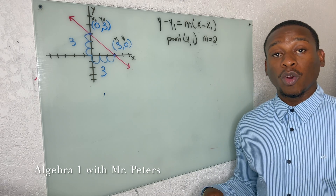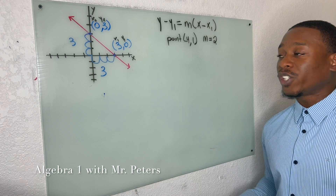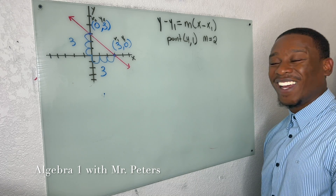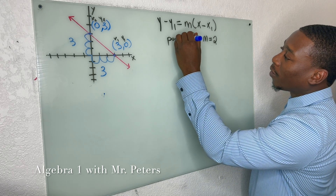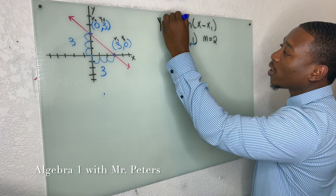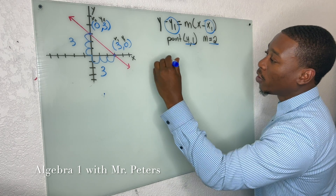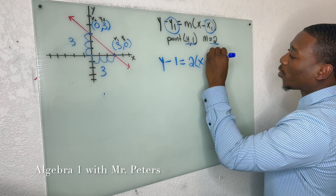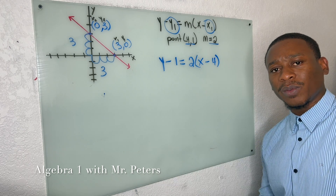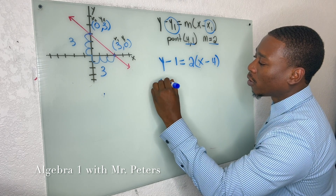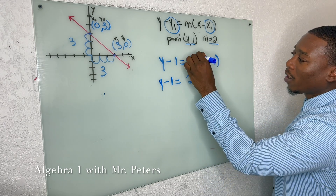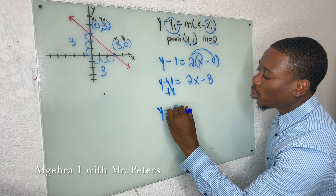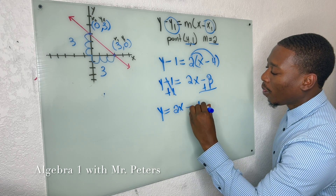Moving on, we're looking at how to work with the point-slope formula. We use this when they give us one point and a slope and tell us to create the equation for a line. We take the x and y values and substitute them in where we see y1 and x1, then substitute 2 for m. So we have y minus 1 equals 2 times (x minus 4). Then we distribute and solve — we get 2x minus 8 after distributing.